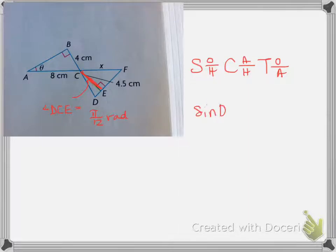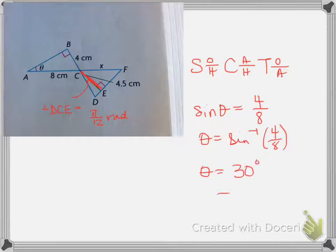Sine of the angle theta, which is what we need to find, is equal to 4 over 8. 4 over 8 is equal to 1 over 2, so theta is equal to sine inverse of 4 over 8, which is 1 over 2. Sine inverse of 1 over 2, you're going to find out, is 30 degrees. So, theta is equal to 30 degrees in radians, you multiply by pi over 180, and that will give us pi over 6 radians.